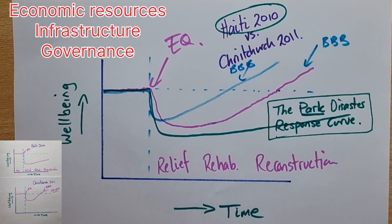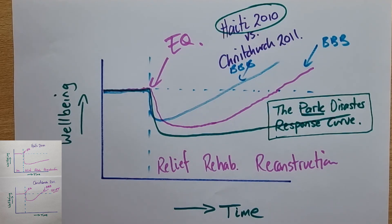We've got economic resources — New Zealand can fund recovery while Haiti relied on foreign aid. There's also infrastructure: Christchurch's buildings were designed to withstand earthquakes whilst Haiti's weren't. And then governance: a stable government helped Christchurch coordinate its response while Haiti's struggled. The Park Disaster Response Curve is a reminder of how development affects resilience — more developed countries recover faster, and less developed countries suffer longer-lasting impacts.